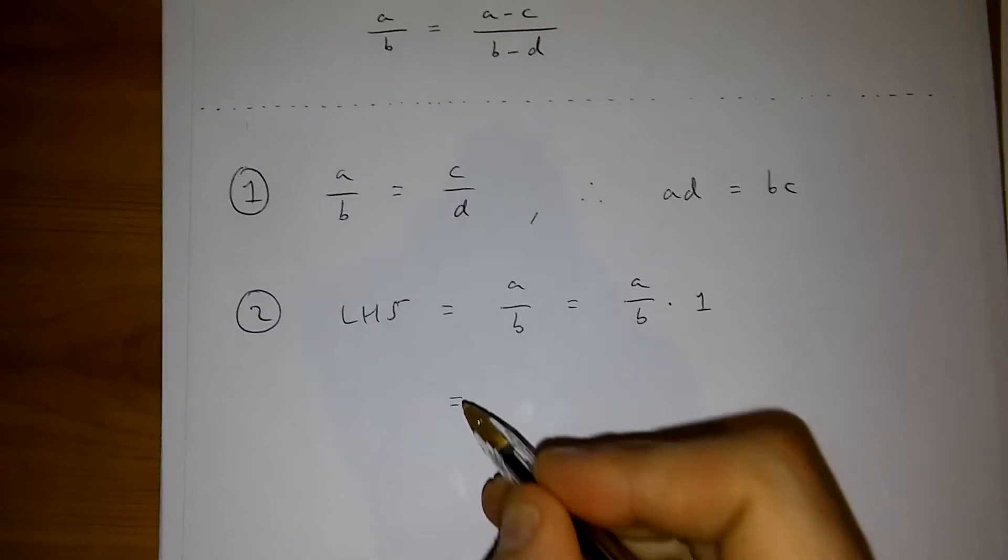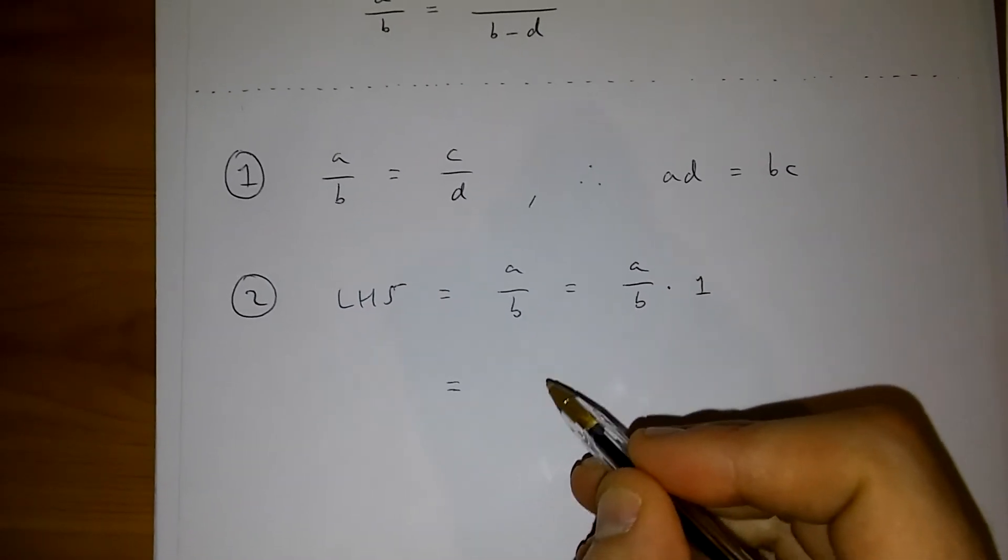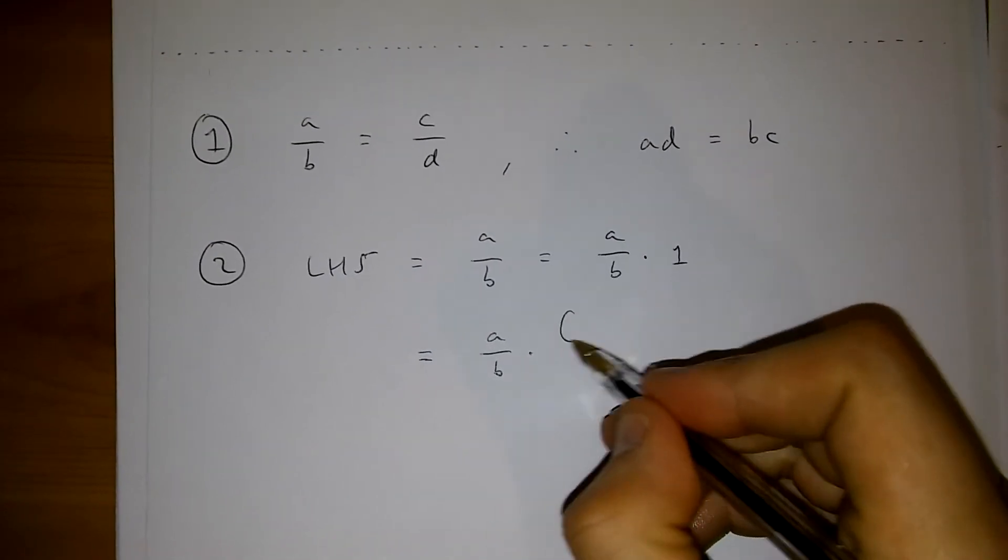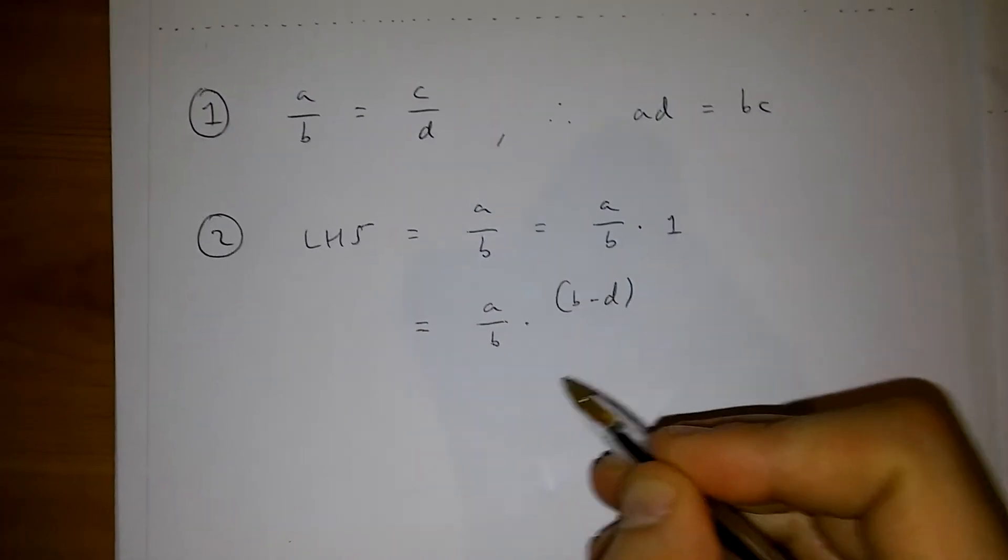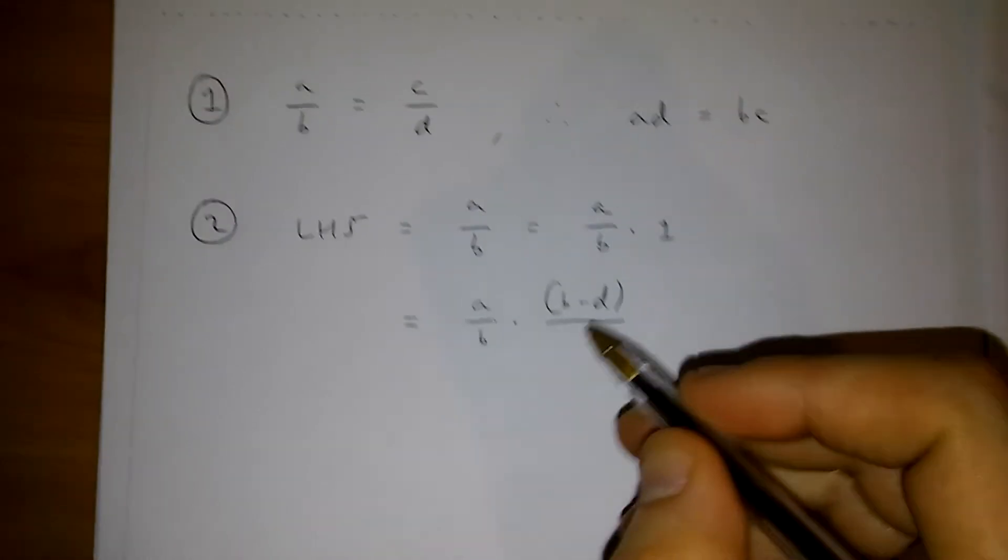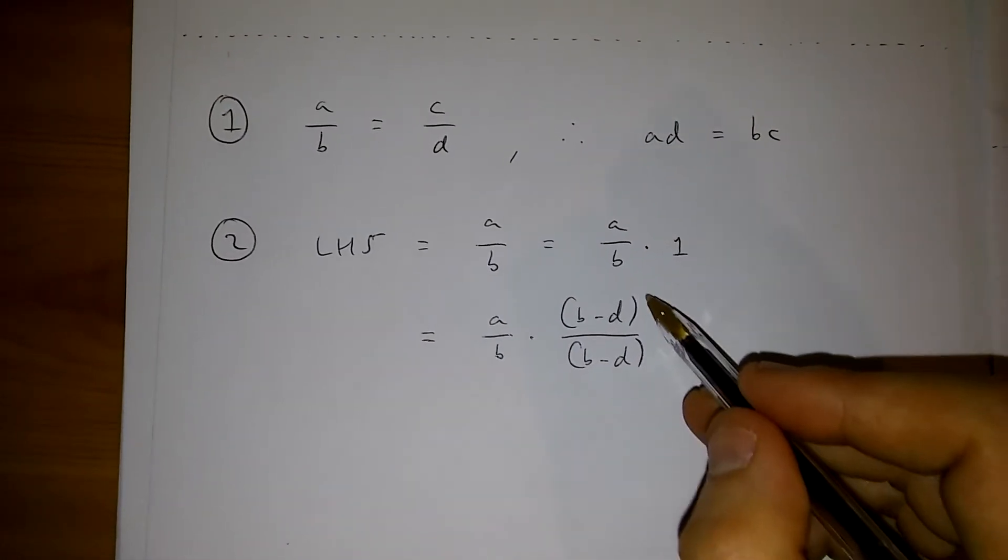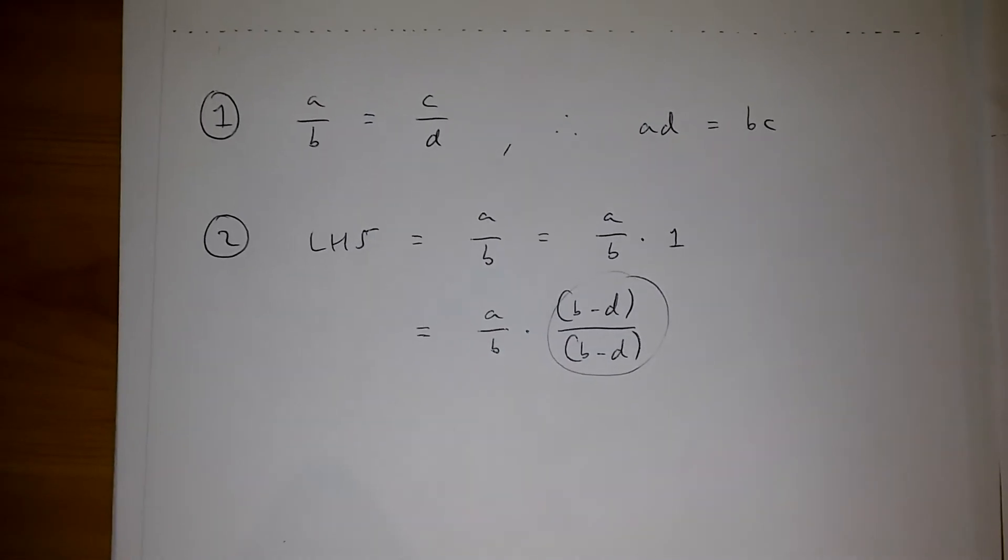And this is going to be the same as a over b times b minus d over b minus d, because this over here is equal to 1.